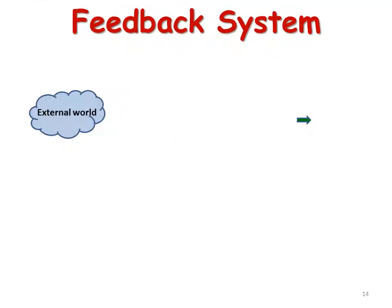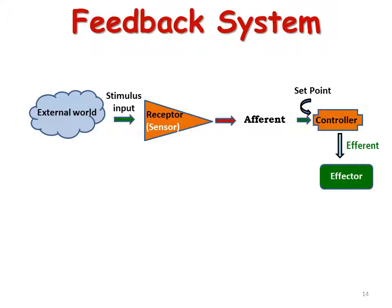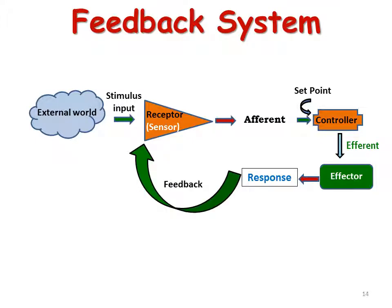In the feedback system, changes in the external world act as a stimulus. This input is detected by the receptor, the sensor in the body. The information is carried along afferent nerves to the controller, which sets the set point. From there, the controller sends signals via efferent pathways to the effector organ. The response produced is opposite to the original stimulus, opposing it — this is the control feedback system.